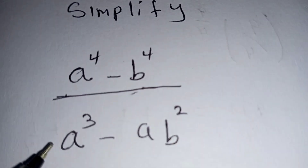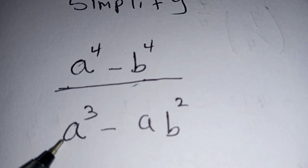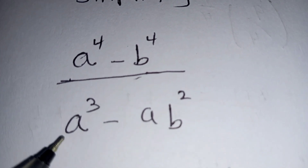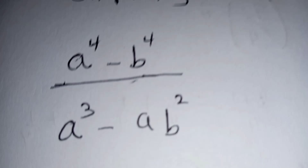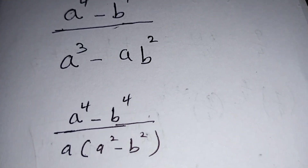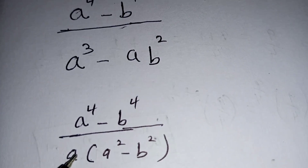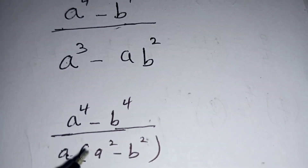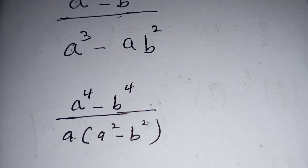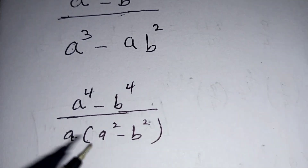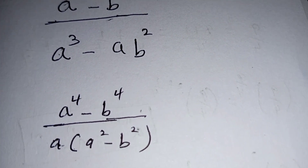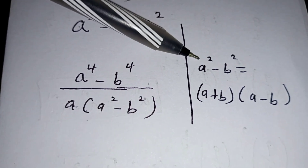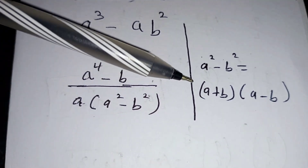We start by factorizing the 'a' which is common on the denominator. When we factorize 'a' from this part, we will be left with a squared minus b squared, since a times a squared is a power 3. Then we make use of this identity to expand the denominator and the numerator.